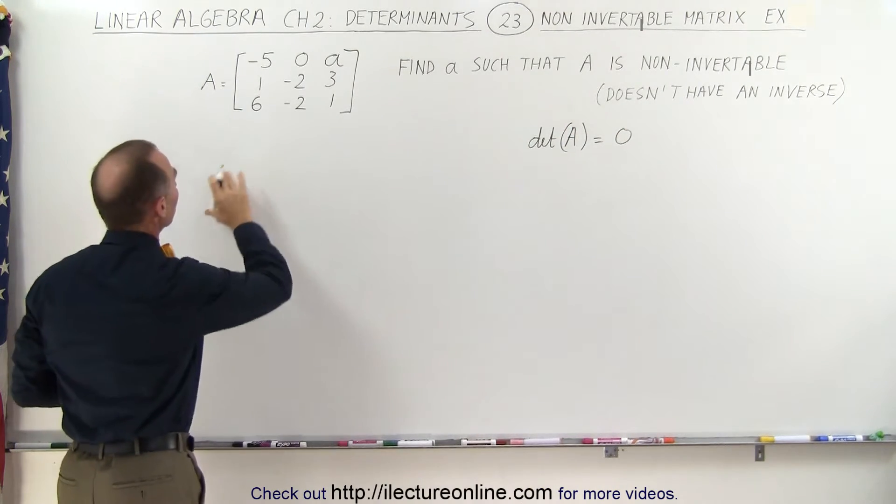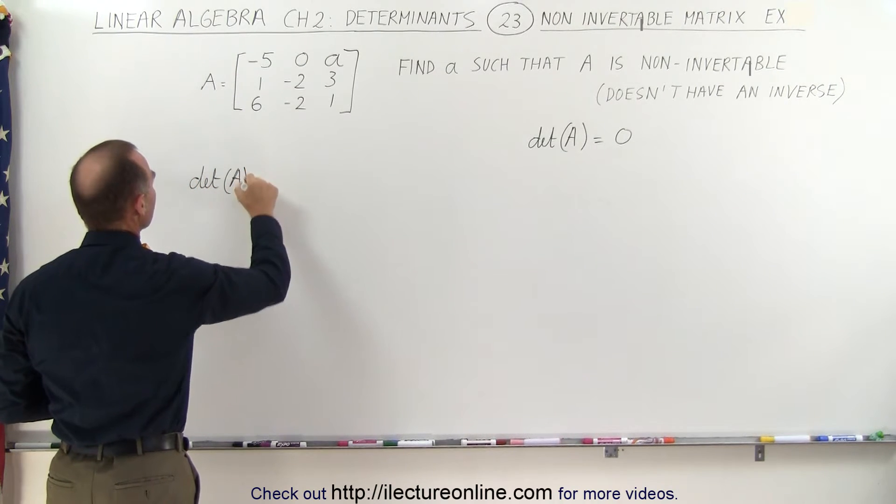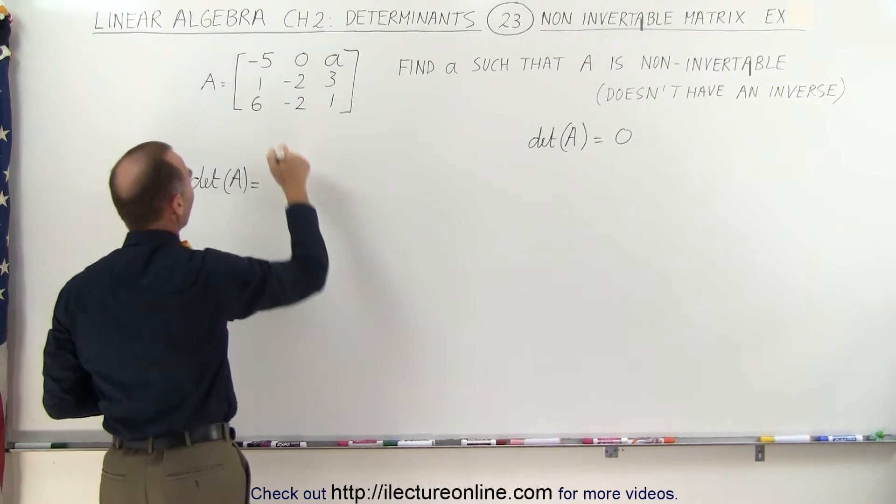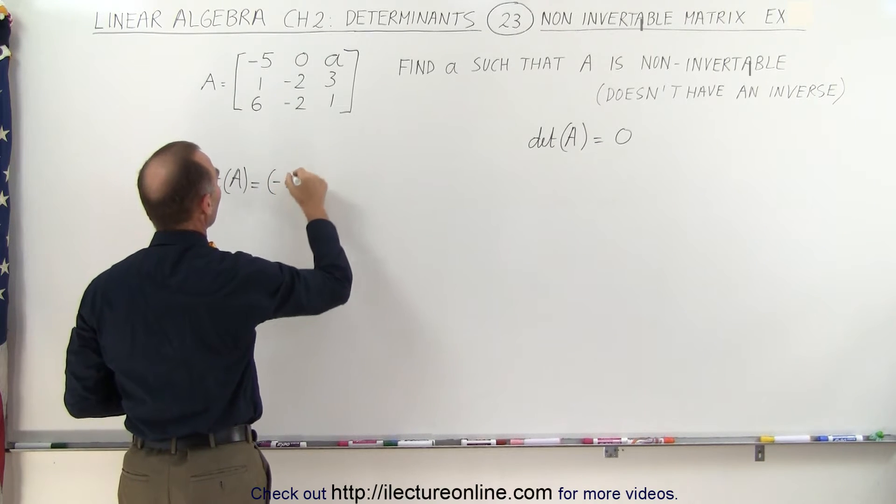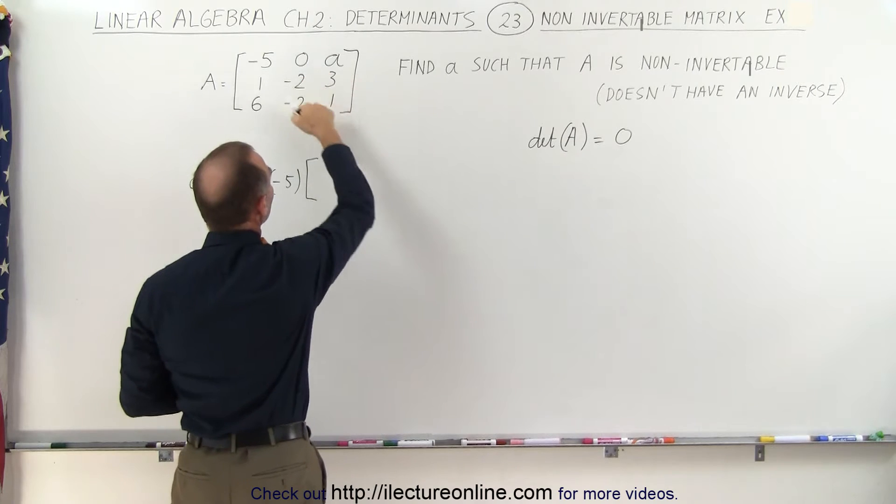Now let's find the determinant. The determinant of A is equal to, we'll take the first element minus 5, multiply that times the determinant of these four elements.